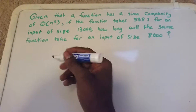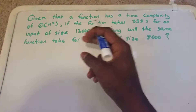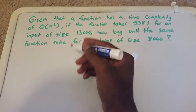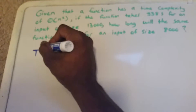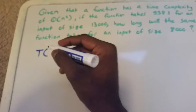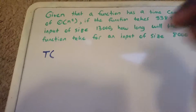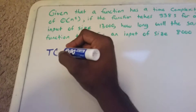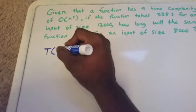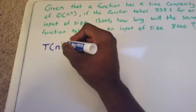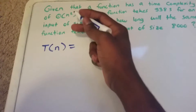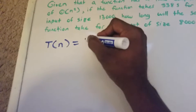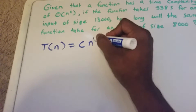The first thing we have to do is set up this problem. Given a function has a time complexity of theta n squared, by the definition of theta n squared, that means we have a function of time — we call it T — with input of size n. And by the definition of theta n squared, we know that this is going to be some constant times n squared.